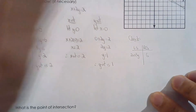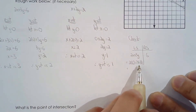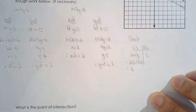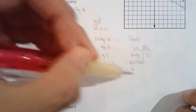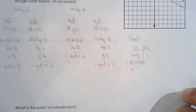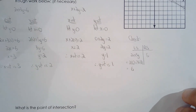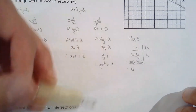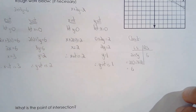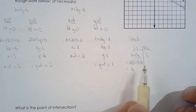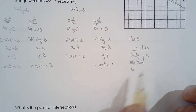Checking equation one — left side: 2x plus 3y with x equals 6 and y equals -2: 2 times 6 is 12, 3 times -2 is -6, so 12 minus 6 equals 6. Right side is 6. Left side equals right side. However, this only proves (6, -2) is on one of my lines, not both. Checking equation two — x plus 2y with x equals 6 and y equals -2: 6 plus 2 times -2 gives 6 minus 4, which equals 2. Right side is 2. Left side equals right side. Checking with just one equation is not conclusive; you must check every single equation to prove you have the correct solution.